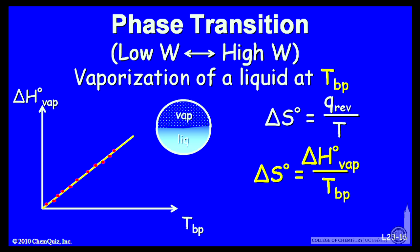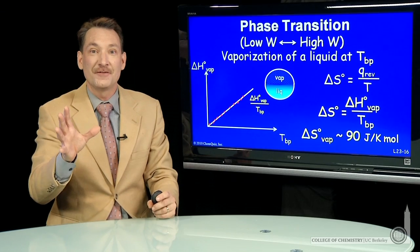They all lie on a line. That line has a slope that's the enthalpy of vaporization over the boiling point, and it's equal to about 90 joules per Kelvin mole.